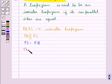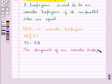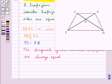The diagonals of an isosceles trapezium PQRS are always equal. For this isosceles trapezium PQRS, we have its diagonals PR and SQ, and they are equal. That is, PR equals SQ.